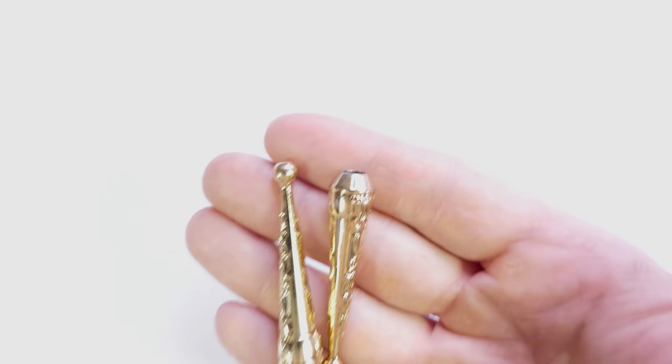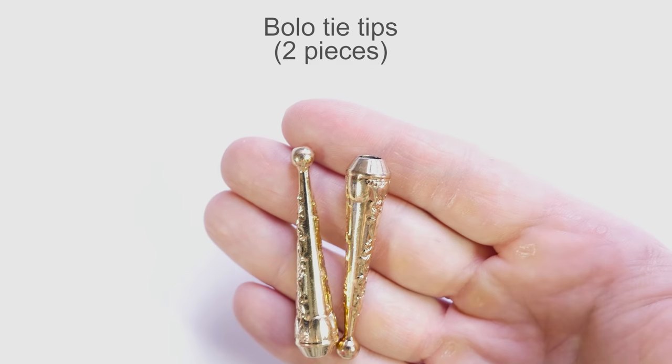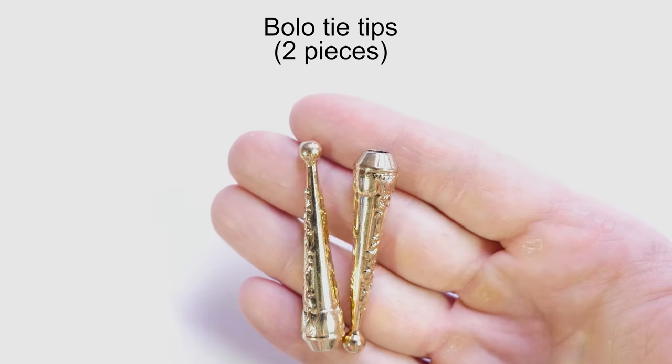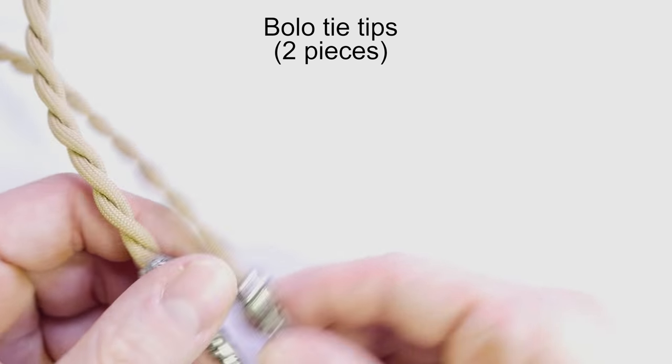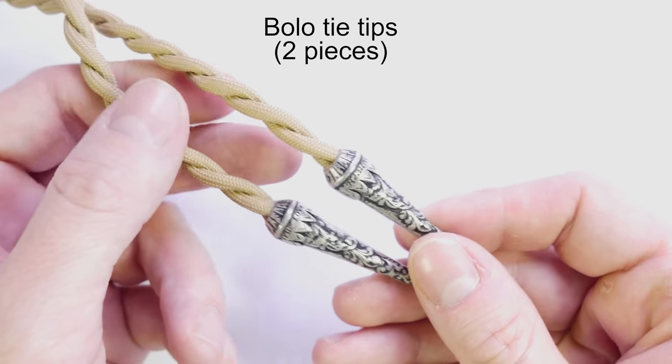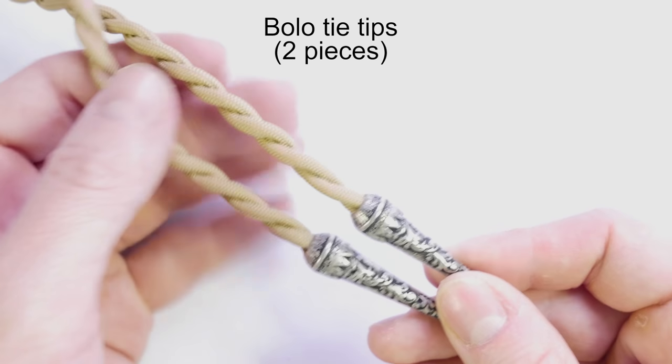Next, you're going to need two bolo tie tips. These come in a variety of designs and colors. We're going to place these onto the ends of our twisted cord.